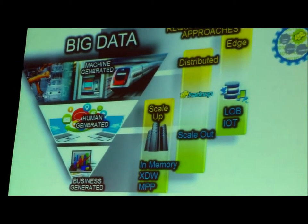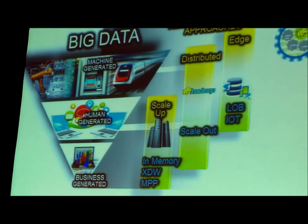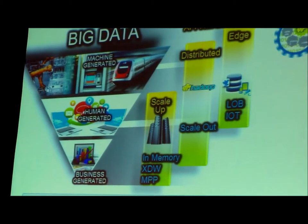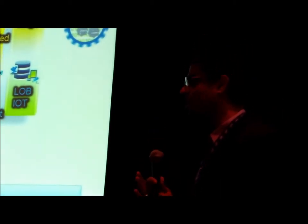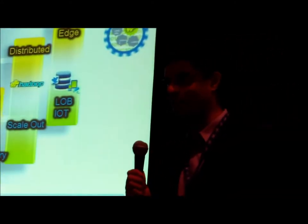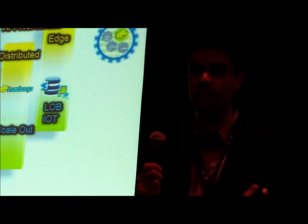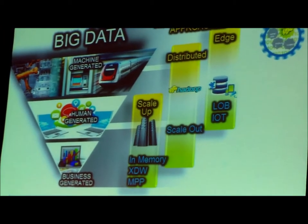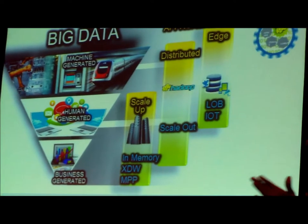This slide talks about what's generating all this data and why big data now. It's coming primarily from three sources: machine-generated data — machines on the edge of networks, web logs, network routers — all generating data. We hear about how a flight from city X to city Y generates petabytes of data. Intel is mining data from about 100,000 PCs in our enterprise to better predict or prevent machines going down. Then there's human-generated data: emails, pictures we share on Facebook.